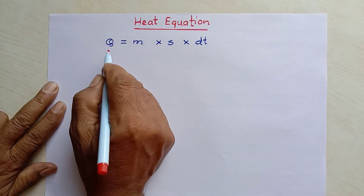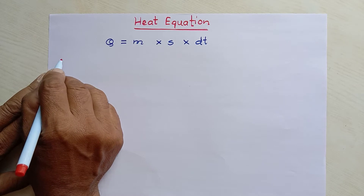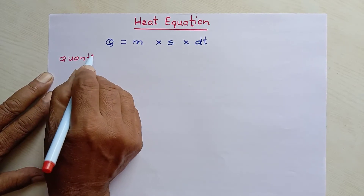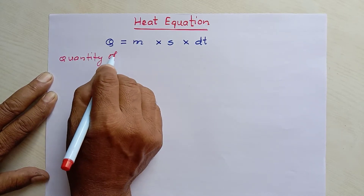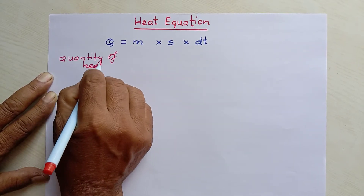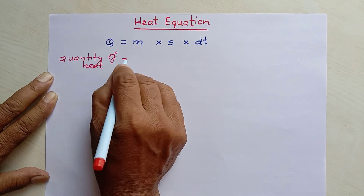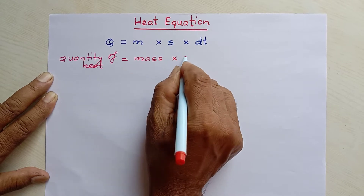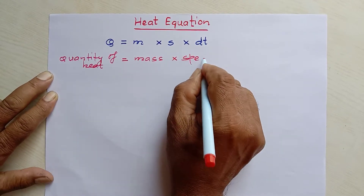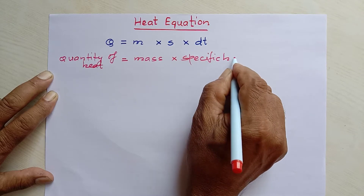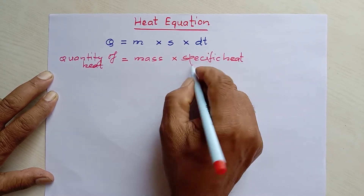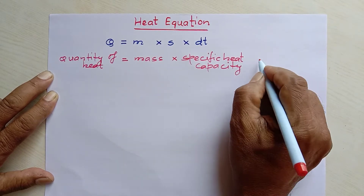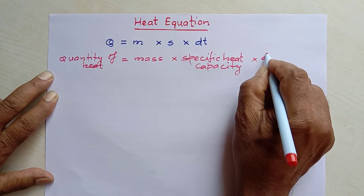In place of q, we write 'quantity of heat'. This is equal to m, which means 'mass', and s means 'specific heat capacity', and dt means 'difference of temperature'.